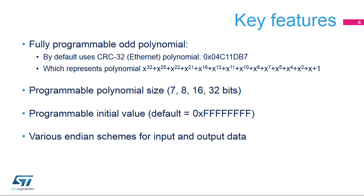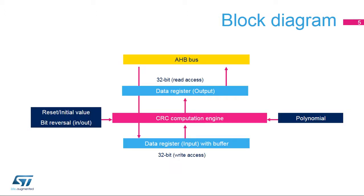The CRC calculation unit integrated in the STM32 features a fully programmable odd-value polynomial with a programmable size of 7, 8, 16, or 32 bits. The initial value is also fully programmable, allowing for very flexible run-time CRC code generation. The peripheral can be configured to support the big or little endian formats of the input and output data, supporting various communication protocols. The CRC calculation unit is connected to the AHB bus interface for optimal performance.